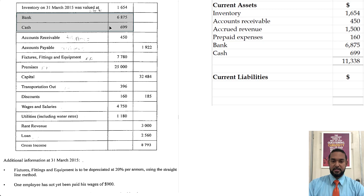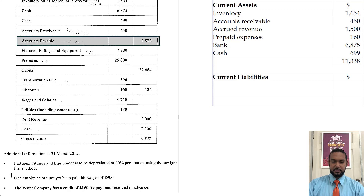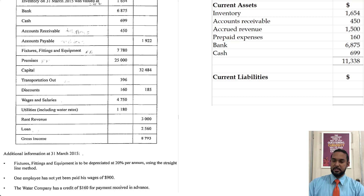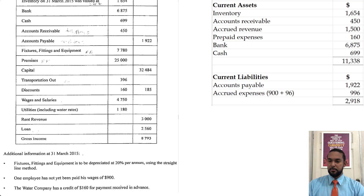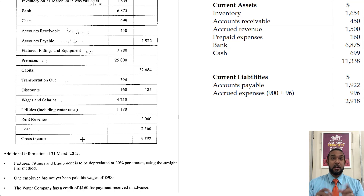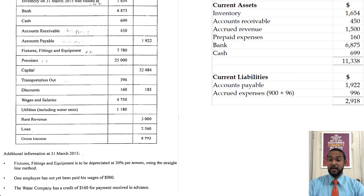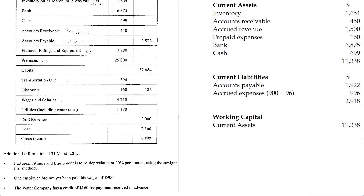For current liabilities, we have accounts payable and the one employee's unpaid wages of 900. We also need to include the accrued interest of 96 — that's the interest on the loan which wasn't paid and didn't appear in the list of balances, so that could easily catch you out. Working capital is simply total current assets minus total current liabilities, giving us the difference.